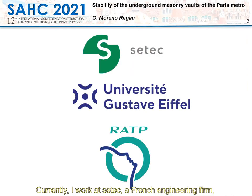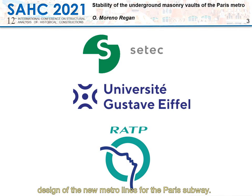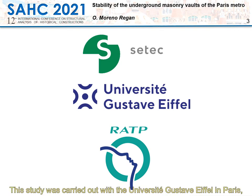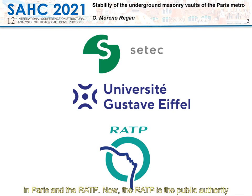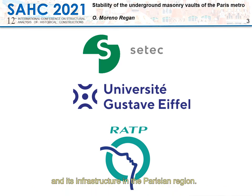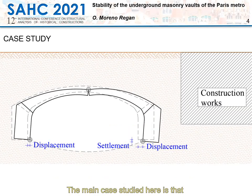Currently I work at CETEC, a French engineering firm that works, among many other projects, on the analysis and design of the new metro lines for the Paris zone. This study was carried out with the University Gustave Eiffel in Paris and the RATP. The RATP is a public authority that operates and manages most of the public transportation and its infrastructure in the Parisian region.